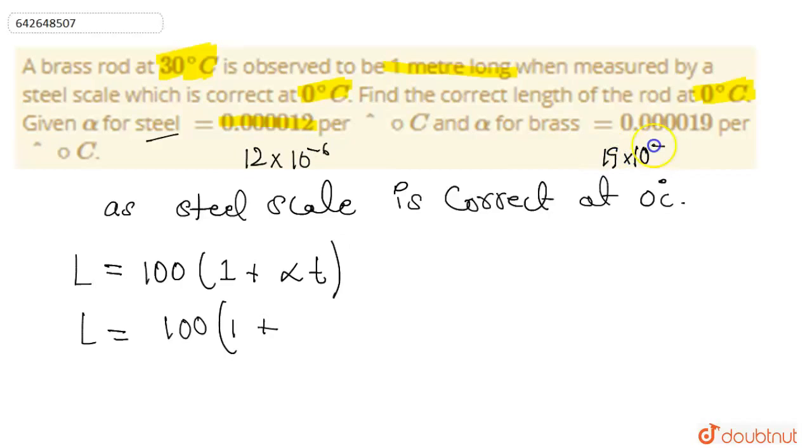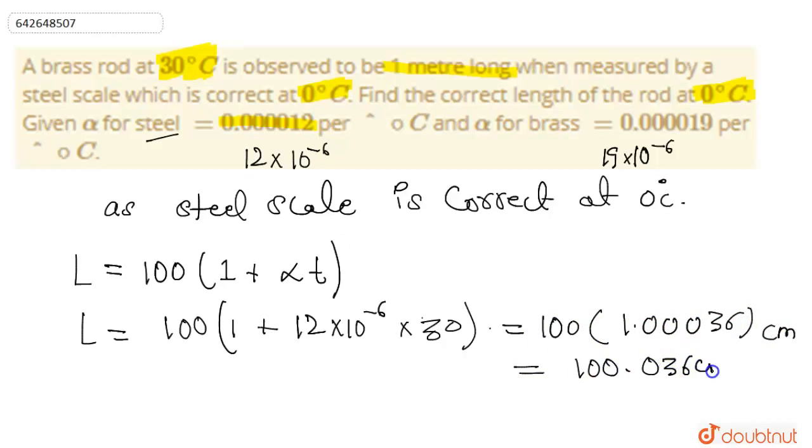For brass 19 × 10^-6, so this will be 12 × 10^-6 × T, that is 30 degrees Celsius. So this will be equal to 100 times 1.00036 centimeter. So we will solve it, so our exact answer will be 100.036 centimeter.